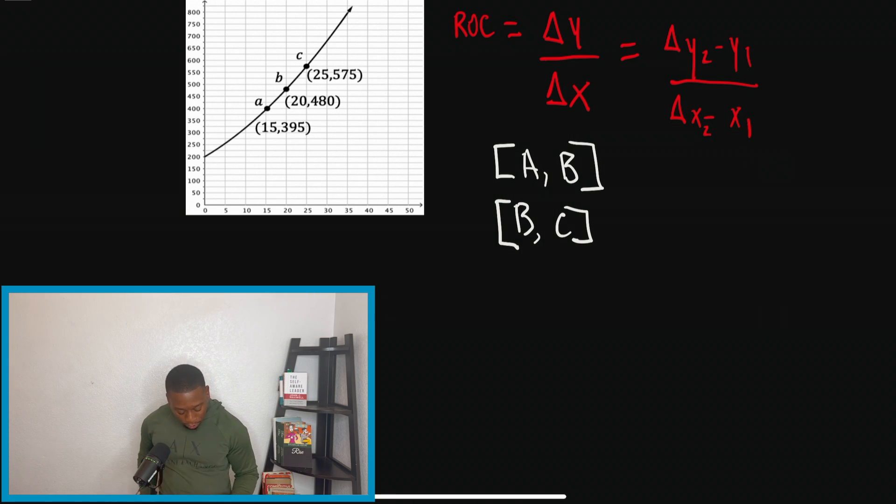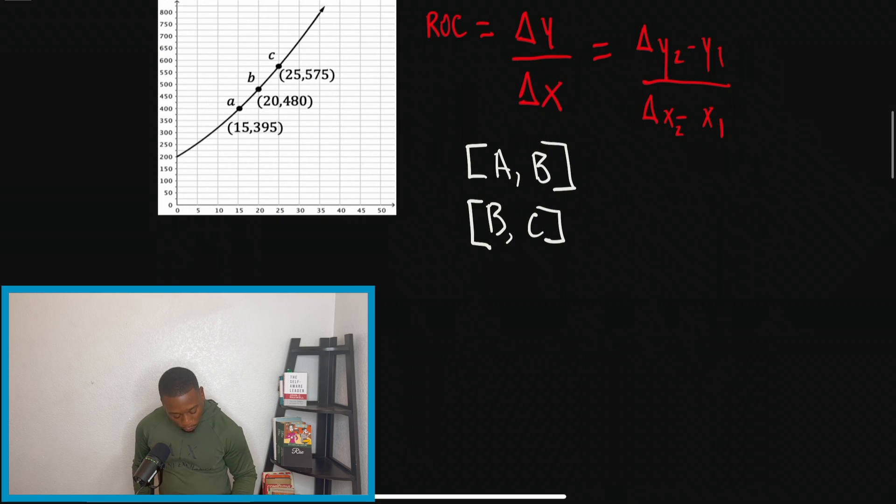So if we look at point A, right? We know point A is 15,395. And then B is 20,480, right? It's right there on the graph for us. We know the points. So I'm going to set this up into the formula, right? Our average rate of change formula, slope formula.